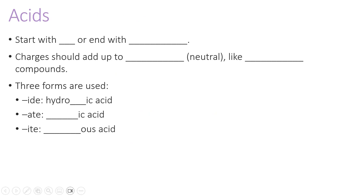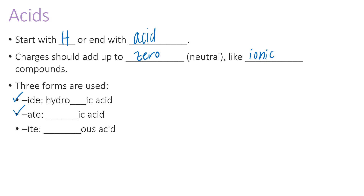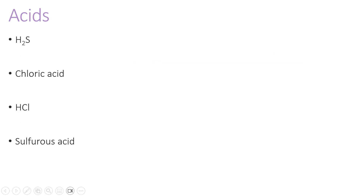Now let's discuss acids. Acids start with hydrogen or end with the word 'acid.' The charges should still add up to zero, just like with ionic compounds. When naming an acid, look at the part that isn't hydrogen. If it ends with '-ide,' name it as 'hydro___ic acid.' If it ends with '-ate,' name it as '___ic acid' with no 'hydro.' If it ends with '-ite,' name it as '___ous acid.'